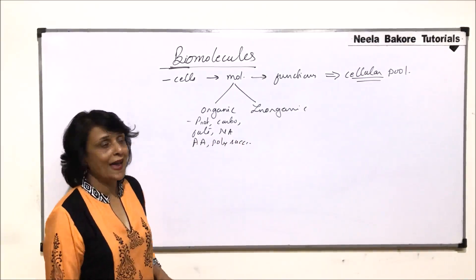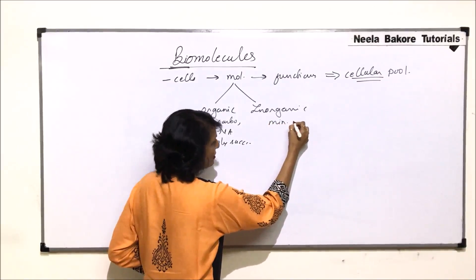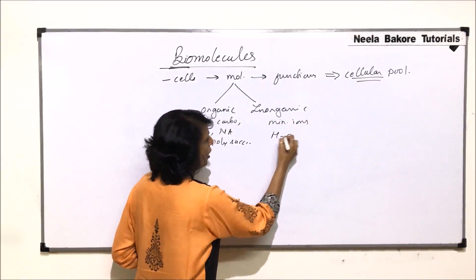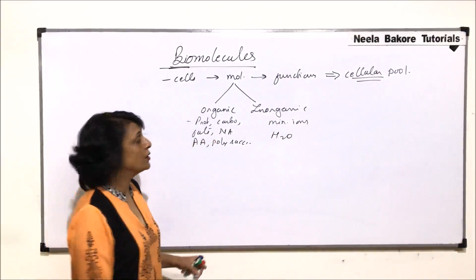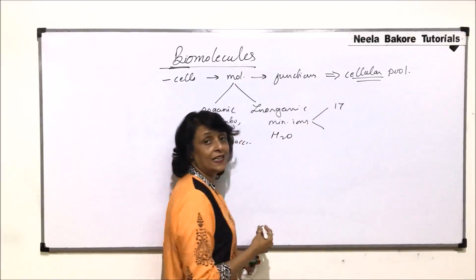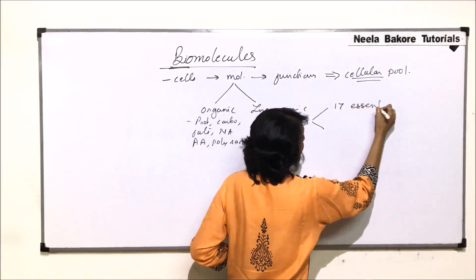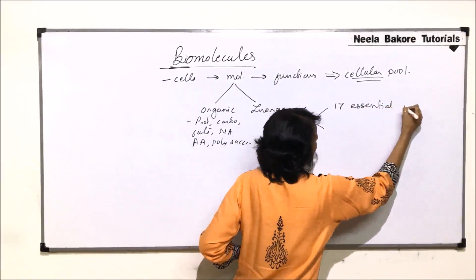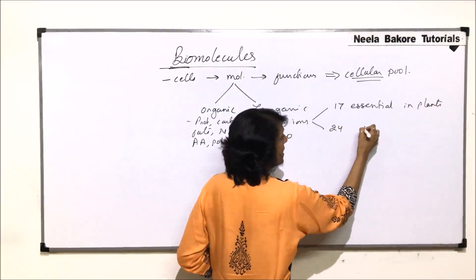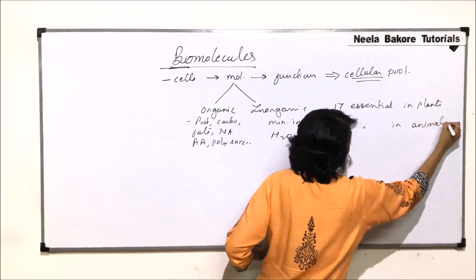Inorganic molecules include minerals, mineral ions, and water. Out of these minerals, 17 are essential in the case of plants and 24 are essential in the case of animals.